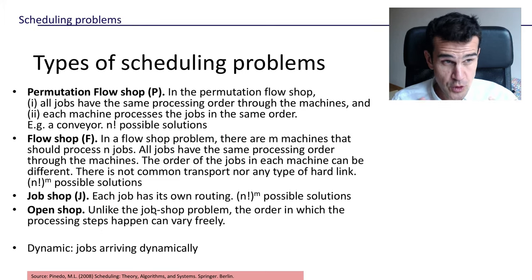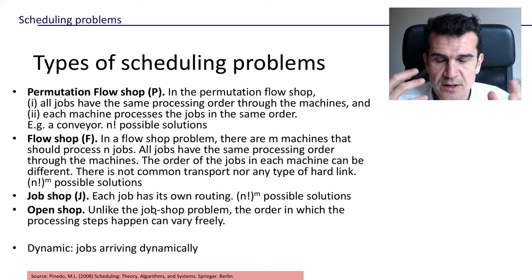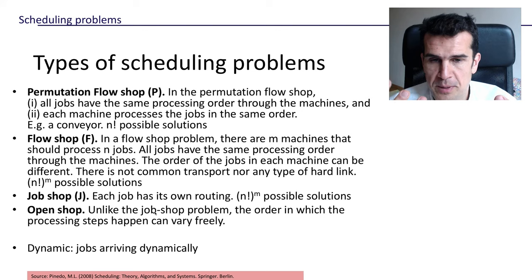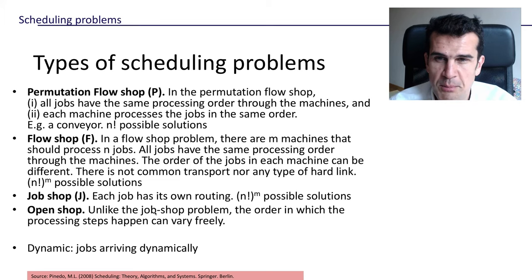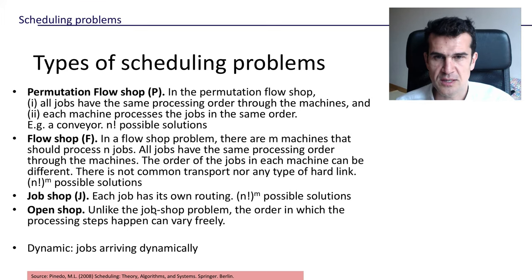There are even more complex problems like the open shop, where the order in which the tasks of each job must be done is not predetermined and you may change that order for a particular job. And even more complex problems are dynamic problems where jobs are arriving in time dynamically. But in this course, we're going to focus on the simplest problem within the scheduling problem literature, which is the permutation flow shop, which is already really complex — it's an NP-hard problem — and we've seen how quickly the number of possible solutions grows.